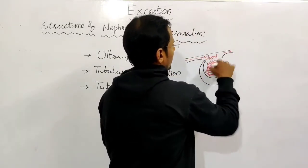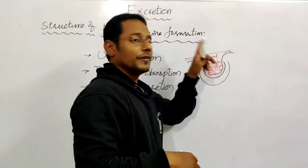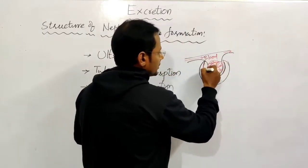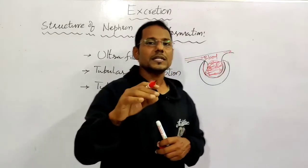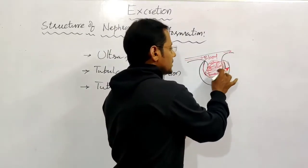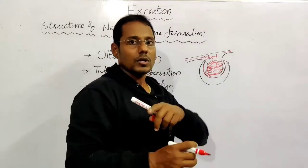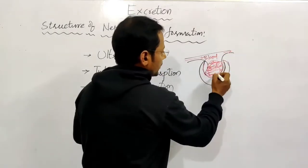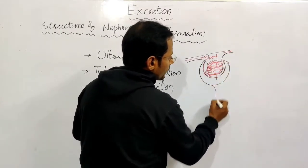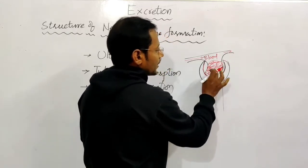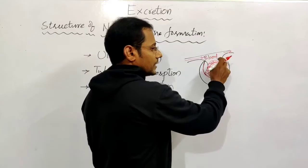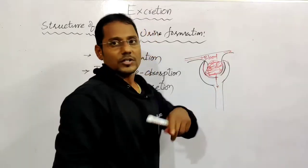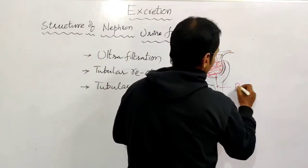Blood enters and undergoes filtration. The Bowman's capsule has special cells called podocytes. These podocytes carry out the filtration function. Blood is filtered, and blood cells alone are retained - the vital materials and blood cells are saved. The rest of the liquid part enters into the next structure, which is the tubule. This is called primary urine.